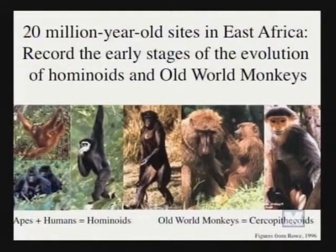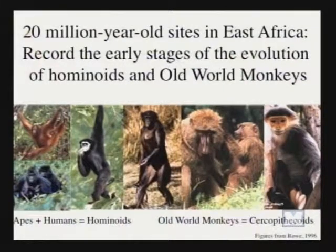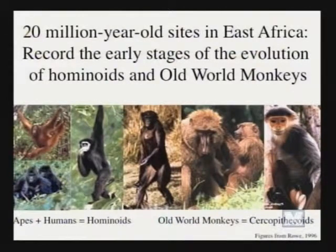I'm going to talk about fossil sites in East Africa that are around 20 million years old. This is where we first start to sample hominoids or apes in the fossil record, and also where we start to sample apes' closest relatives, the old world monkeys. Here are some pictures of some apes — there's an orangutan, gorilla, gibbon, a bonobo — and here are some old world monkeys like baboons and leaf monkeys.